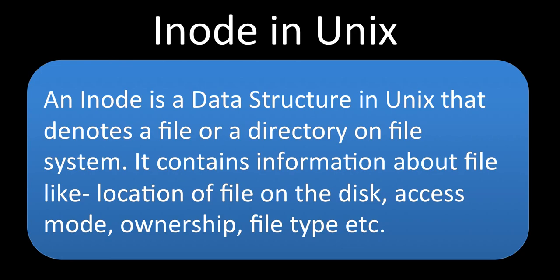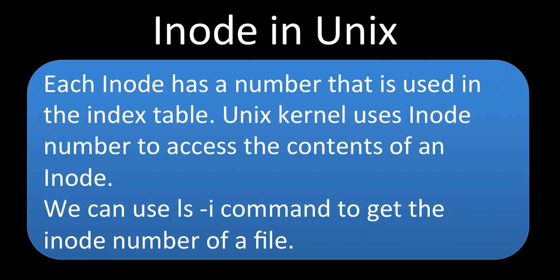The inode contains information about the file, like the location of the file — where exactly on the disk the file is located — the access mode, which describes the permissions, the ownership (who owns the file), and the file type. All this information is stored in the inode data structure, and the UNIX file system uses the inode data structure to maintain all this information.